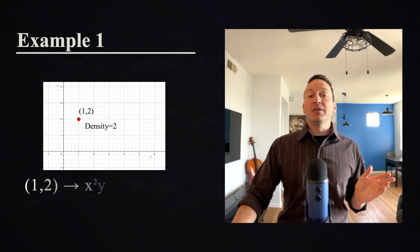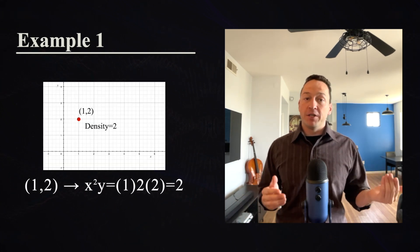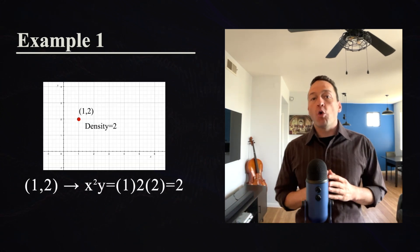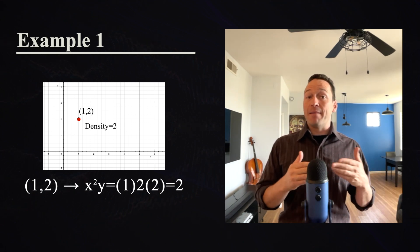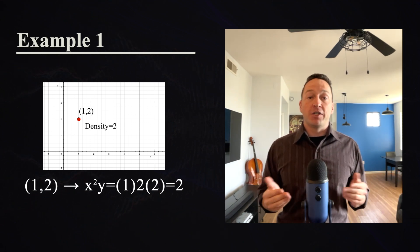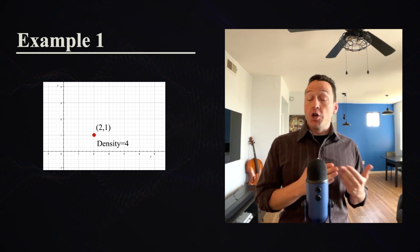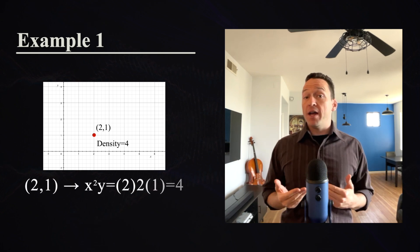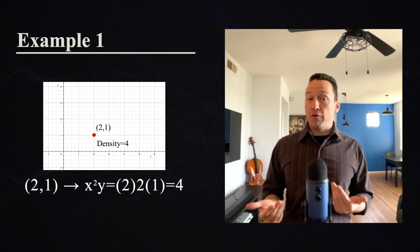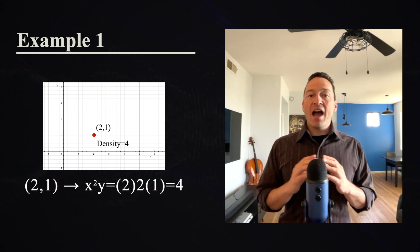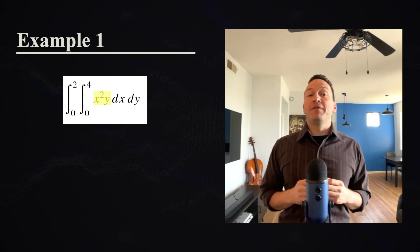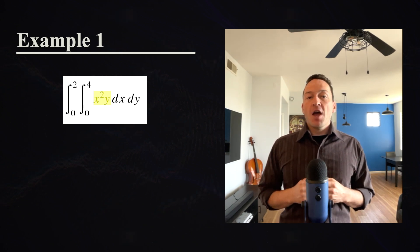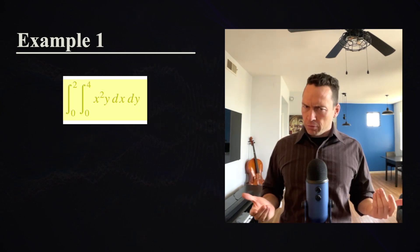For example, at position (1, 2), the corn density would be 2 — you can verify by plugging it into the function. At position (2, 1), the corn density would be 4. So now we know what the integrand could represent physically. But what does the integral as a whole represent physically?